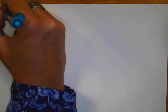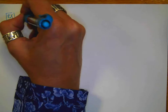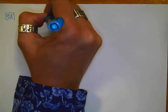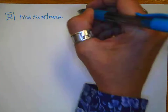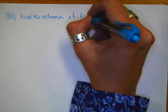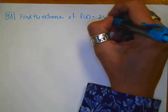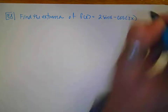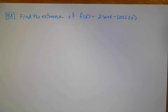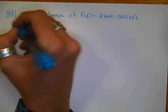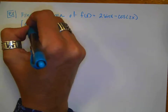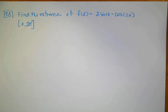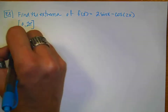Our next example is a little more fun because we have some trig involved. We're going to find the extrema of f of x equals 2 sine x minus cosine of 2x — remember there's a chain rule going on there — on the interval from 0 to 2π.